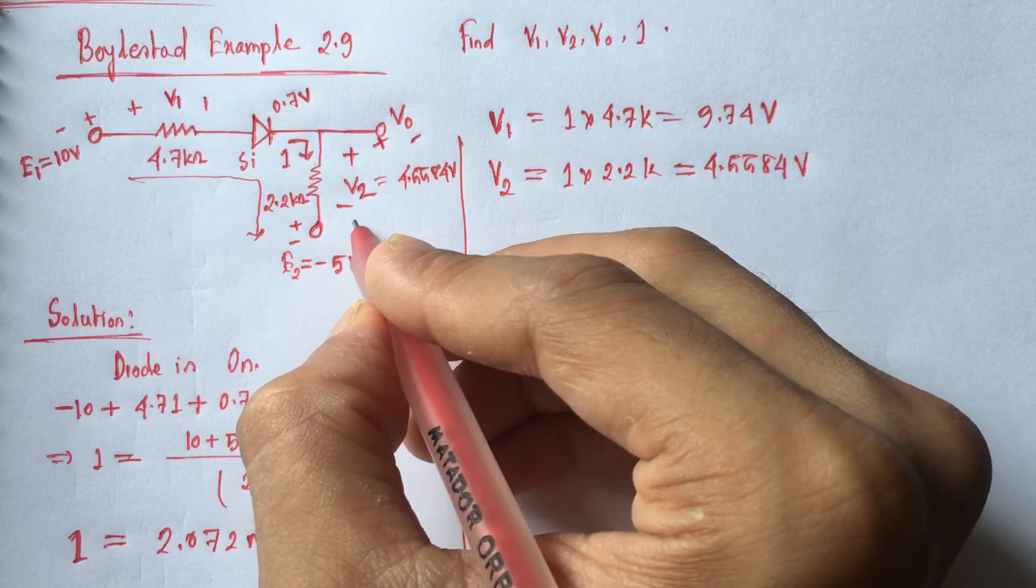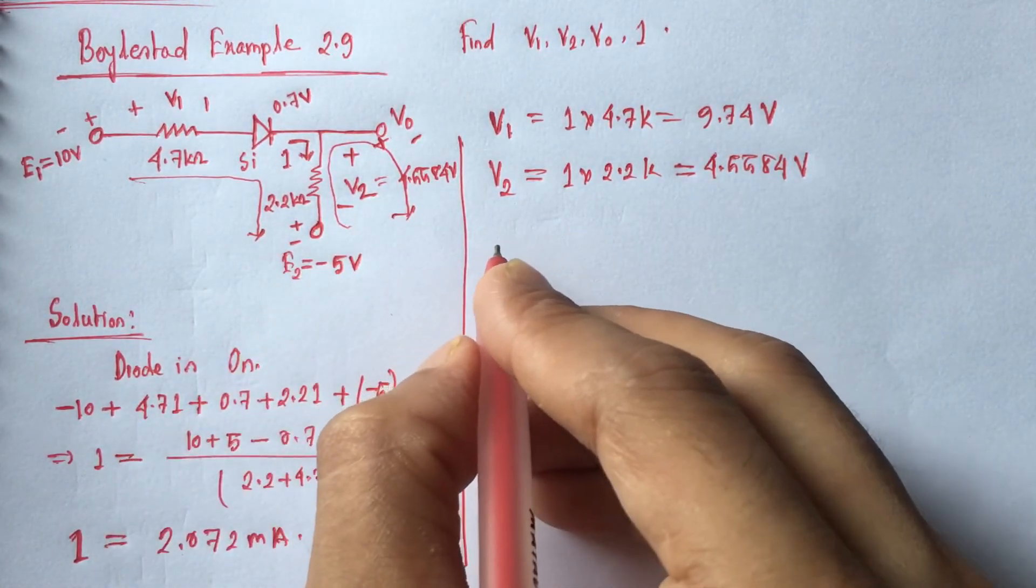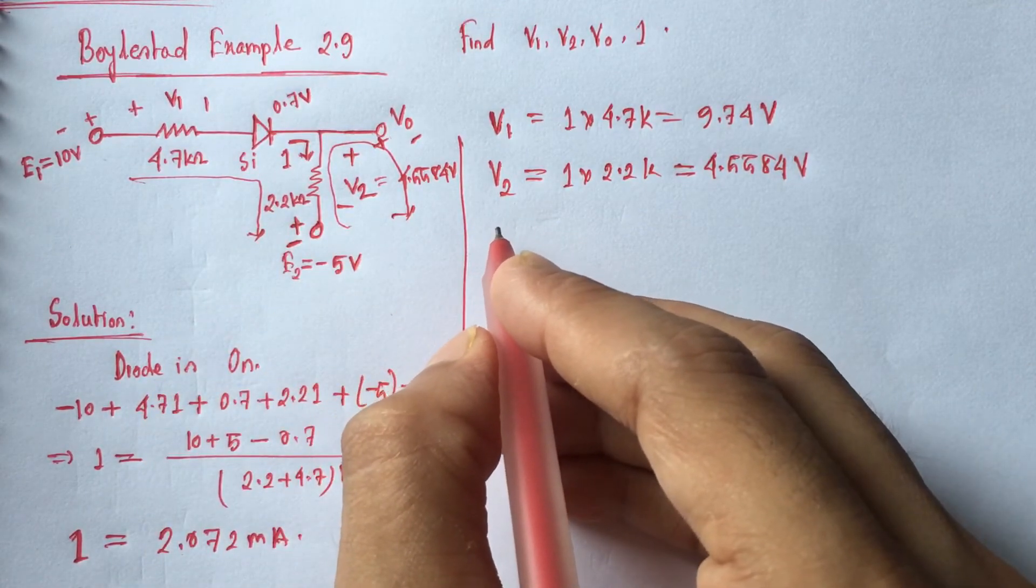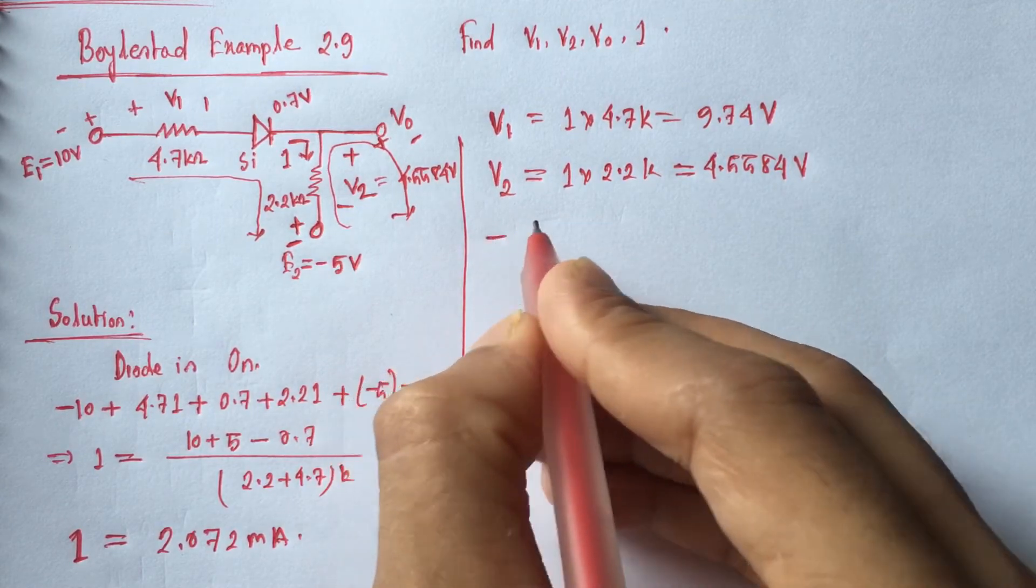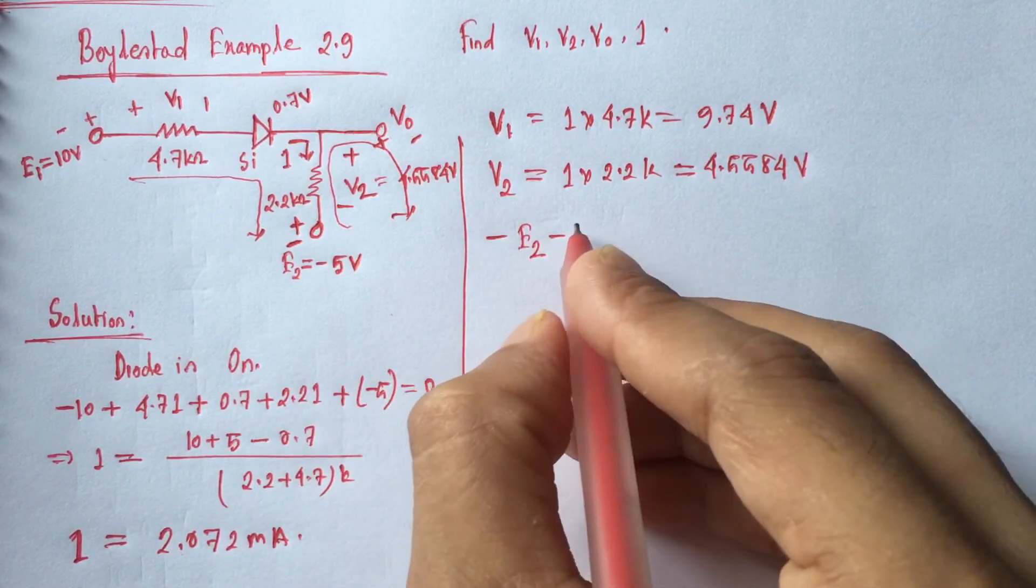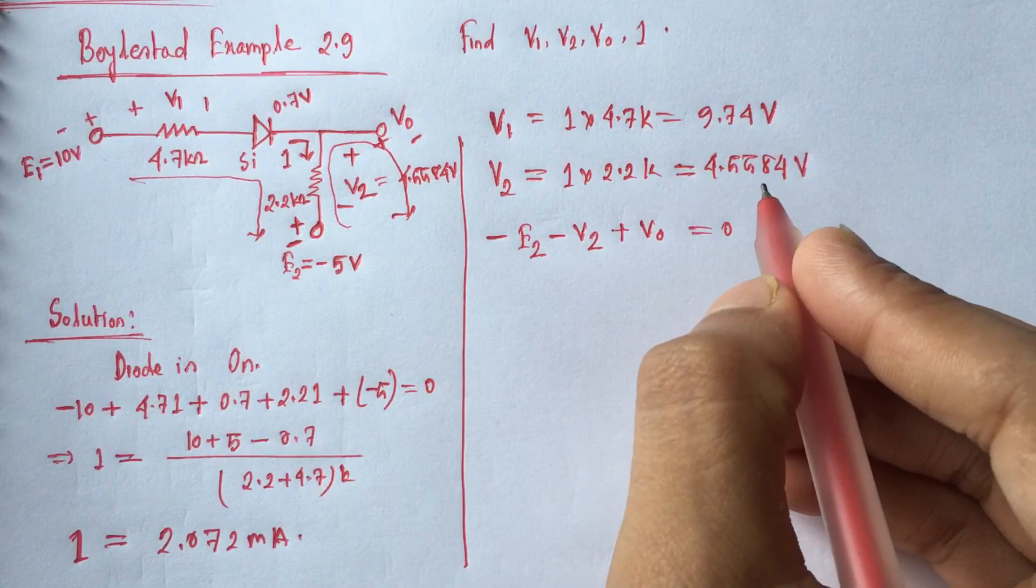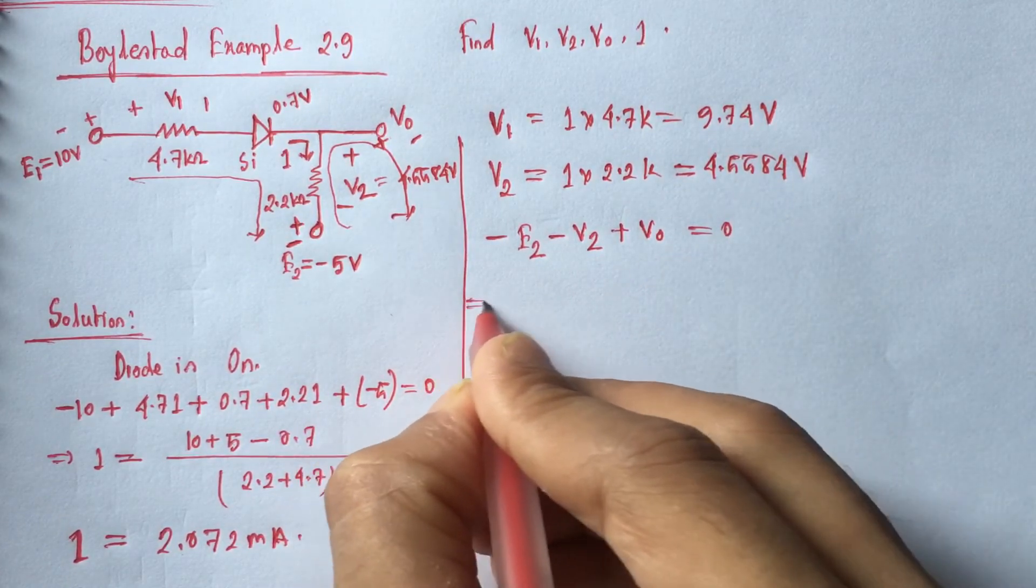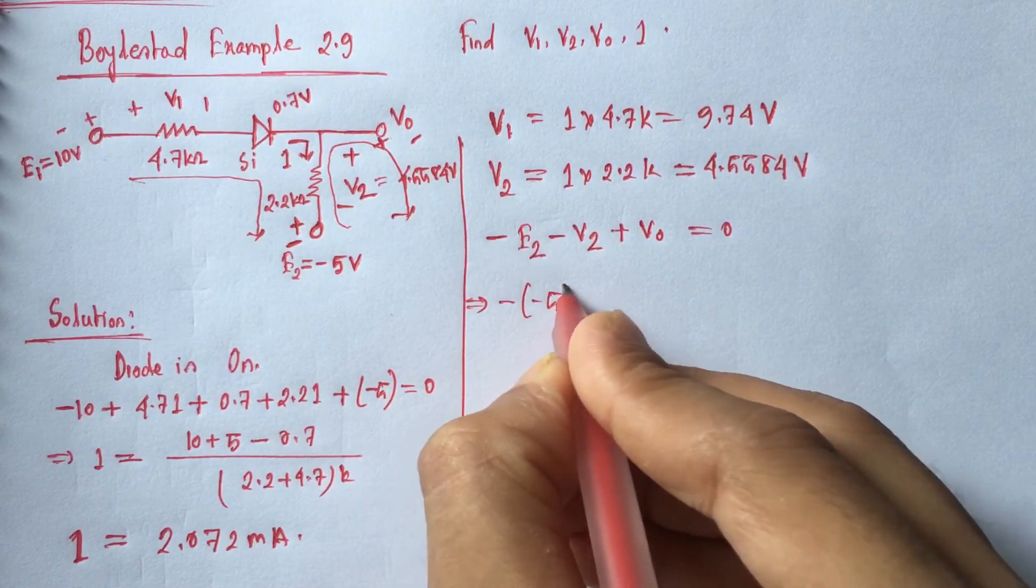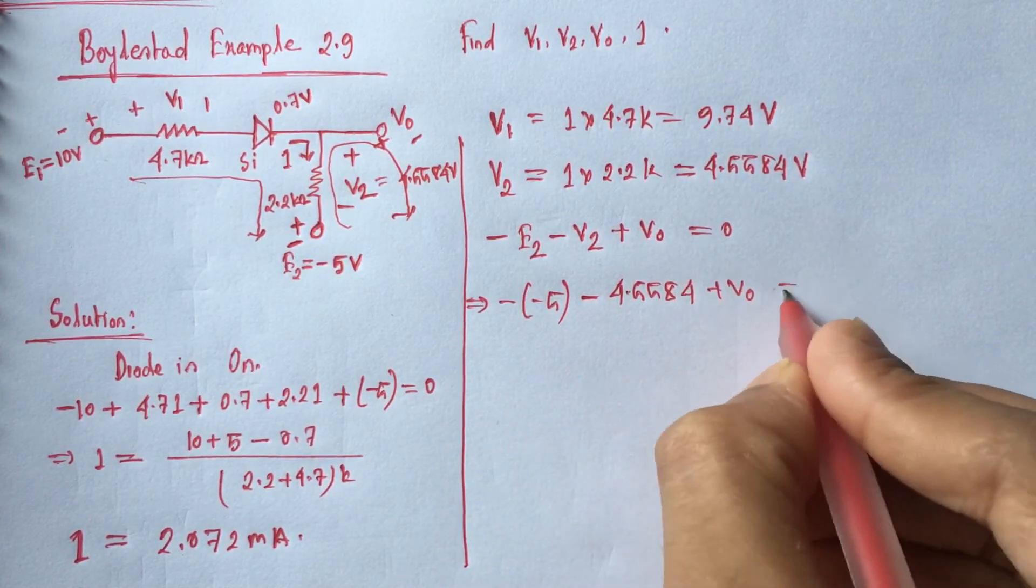Now if we run Kirchhoff's voltage law in this path, we will have minus E2 minus V2 plus V0 is equal 0. Here E2 is minus into minus 5 minus V2 is 4.5584 plus V0 is equal 0.